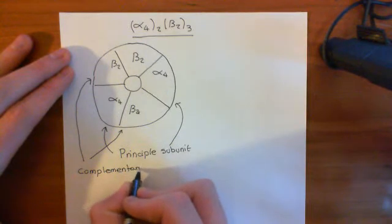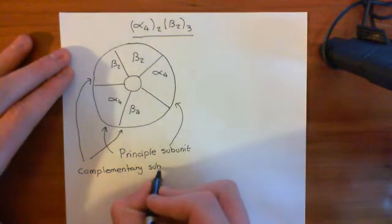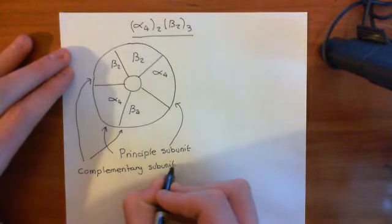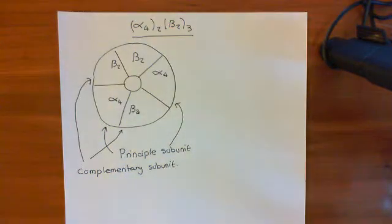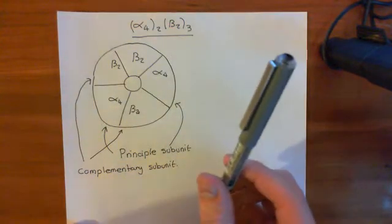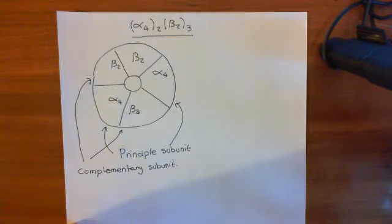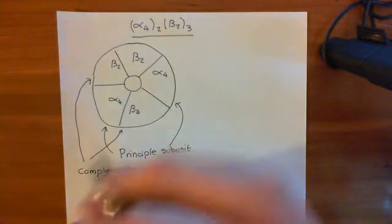And again, you're only going to have two ligand binding domains on these alpha-4, 2, beta-2, 3 subunits. Sorry, these alpha-4, 2, beta-2, 3 nicotinic acetylcholine receptors.